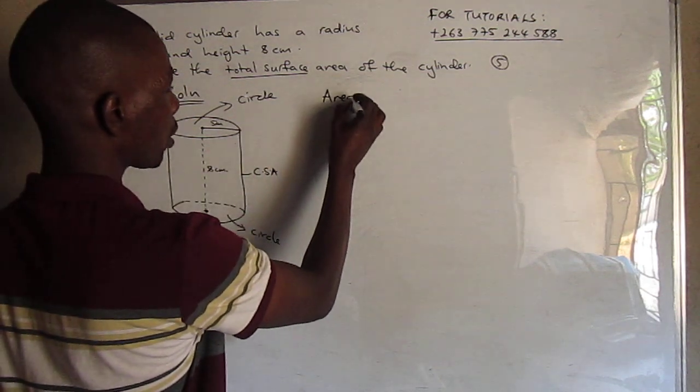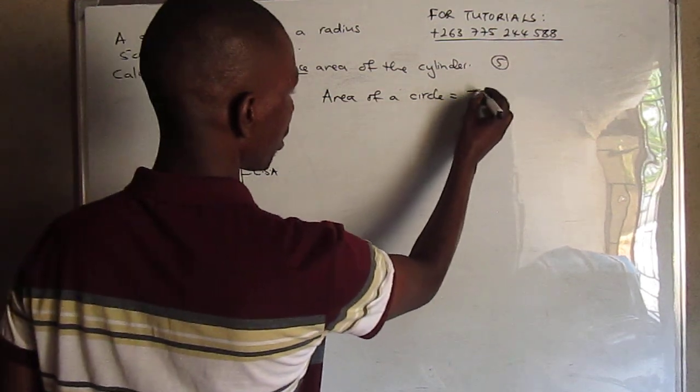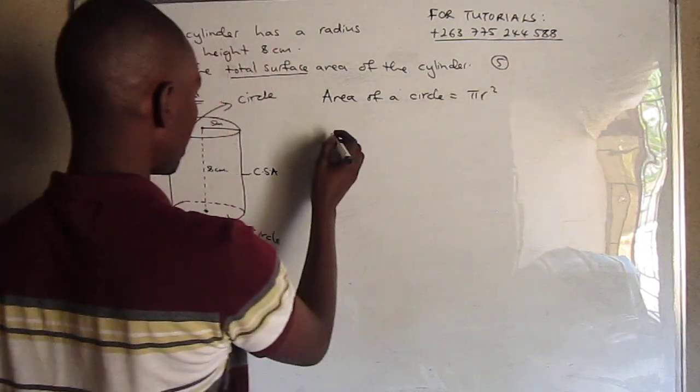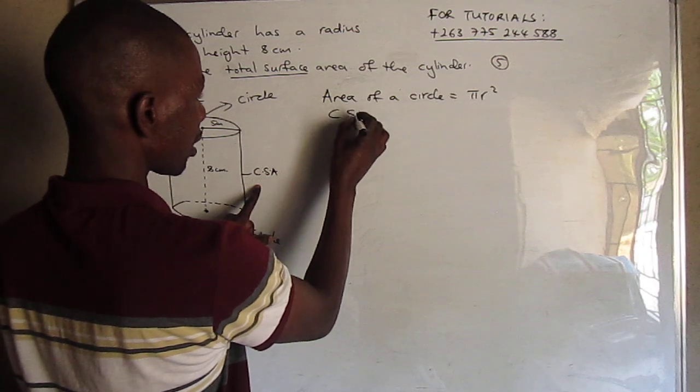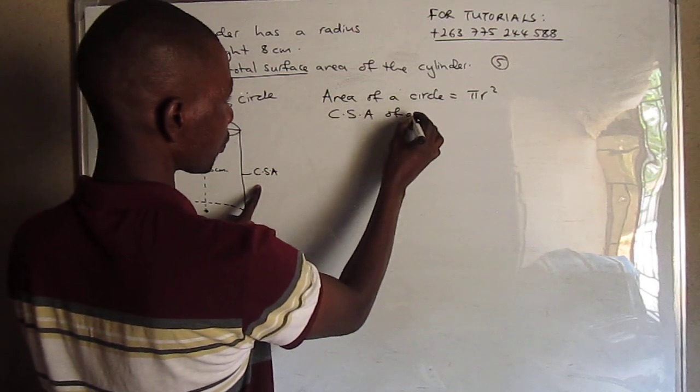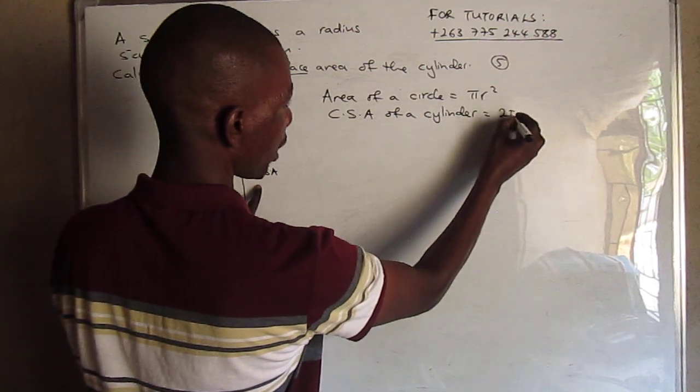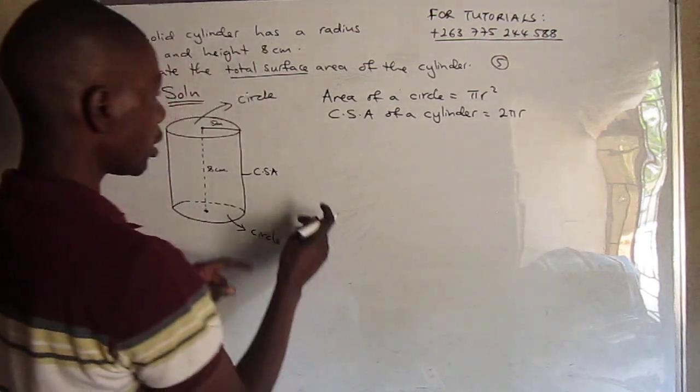So area of a circle is given by πr². Then curved surface area of a cylinder is given by 2πrh.